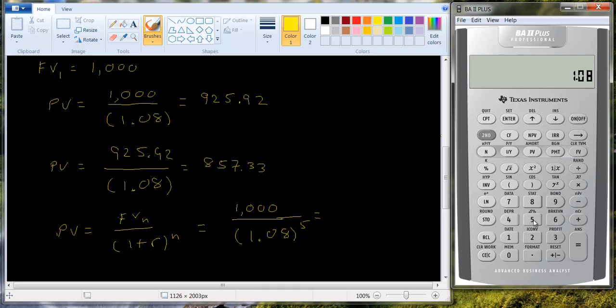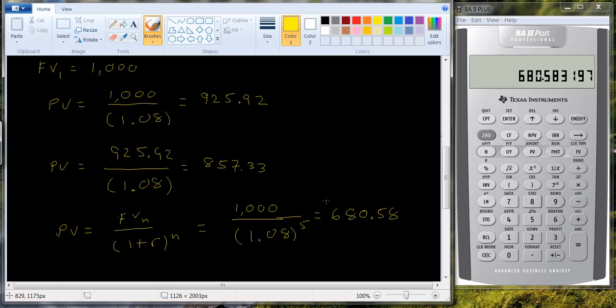Let's raise that to the fifth power. You raise it to a power by hitting the y to the x key. This is this number. We actually want one over this number. So I hit the one over x key to flip it over and then I'm going to multiply it by a thousand. So we get six hundred and eighty dollars and fifty eight cents.